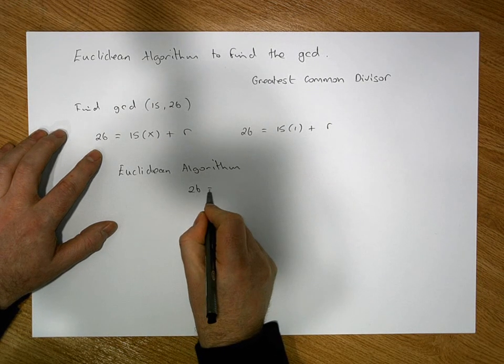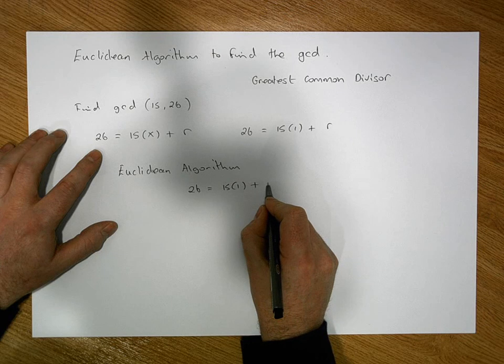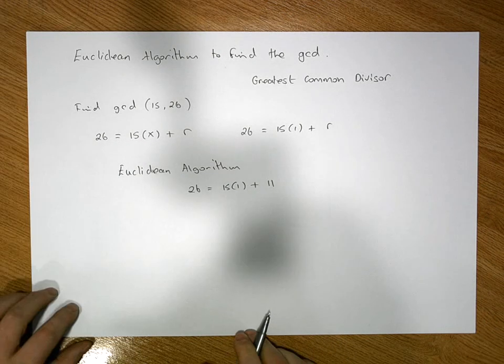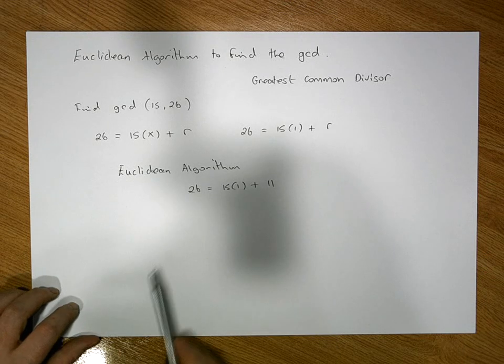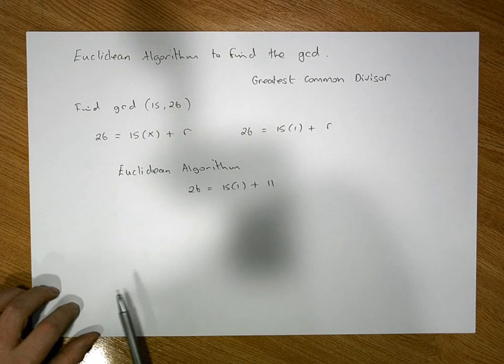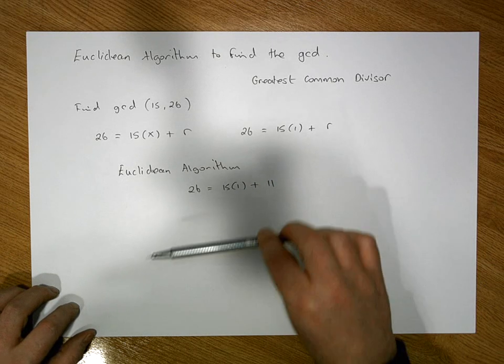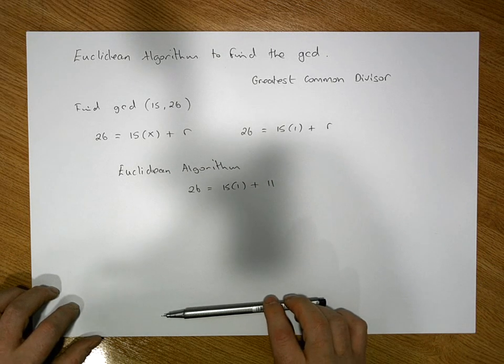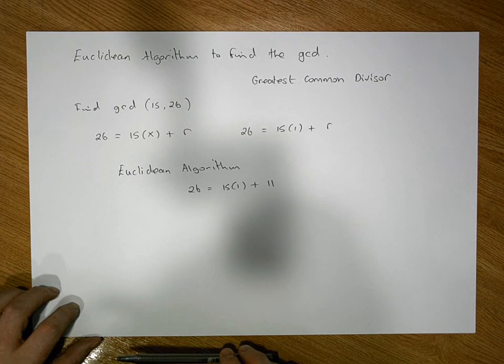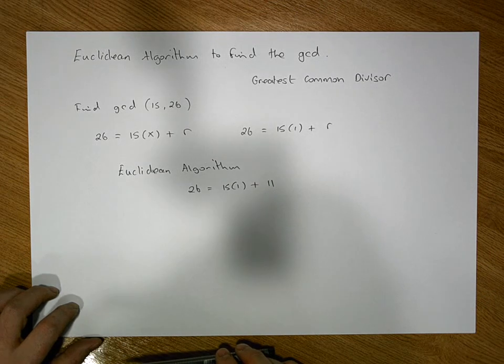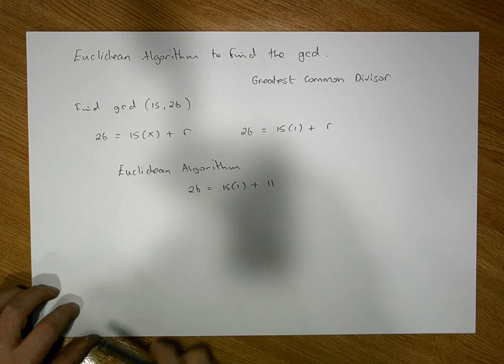We know that 15 divides into 26 once with a remainder of 11. This is what's known as the division algorithm, and what we're going to do is multiple passes of the division algorithm. I'll try to rationalize in a moment why we continually do this. The answer is from a modulo arithmetic perspective, but we won't talk too much about that.